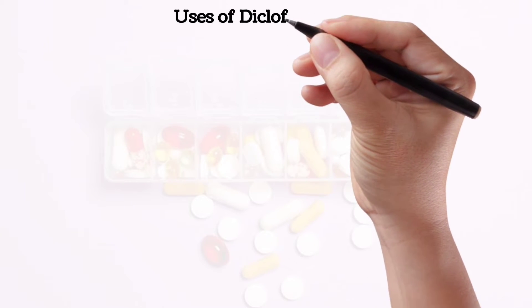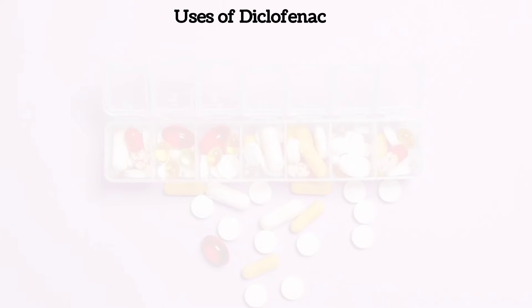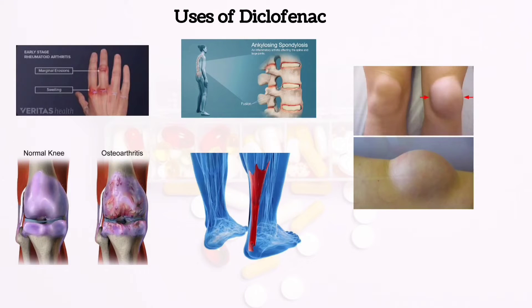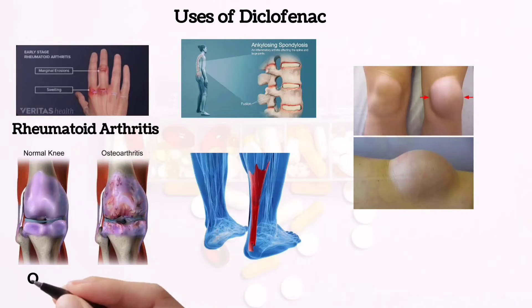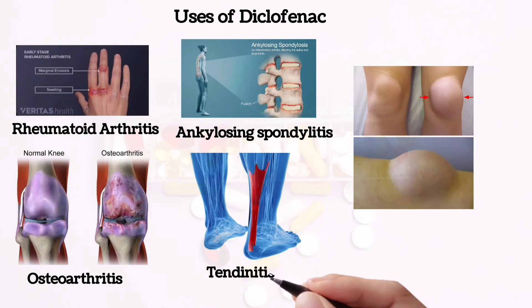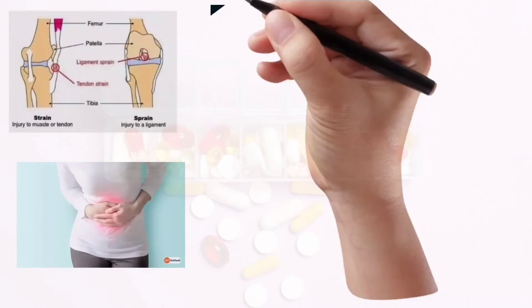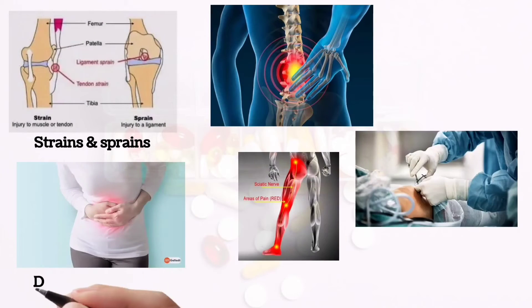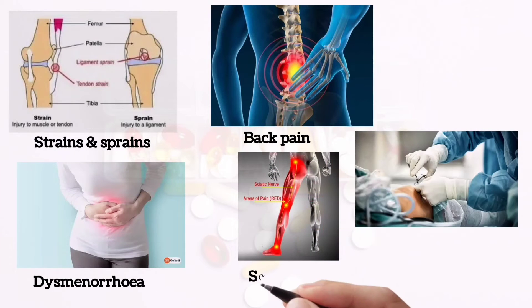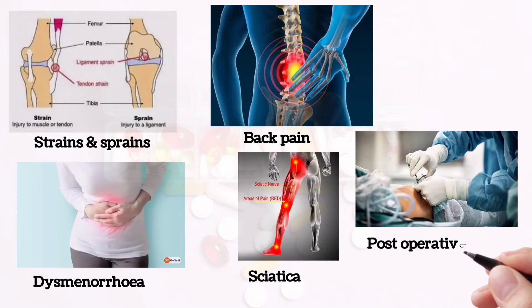Uses of diclofenac: Diclofenac is used in the treatment of painful and inflammatory rheumatic and certain non-rheumatic conditions such as rheumatoid arthritis, osteoarthritis, ankylosing spondylitis, tendonitis, and bursitis, and in other inflammatory or painful conditions such as strains and sprains, dysmenorrhea, back pain, sciatica, and postoperative pain.